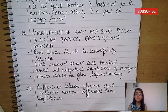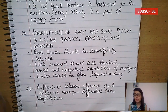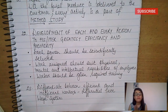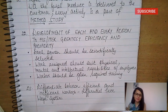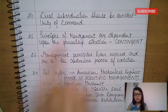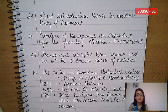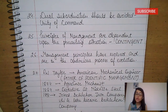Differentiating between efficient and inefficient workers — Taylor really believed in creating a distinction through the differential piece wage system. Dual subordination is also repeated. Then, principles of management are dependent upon the prevailing situation — that is contingent.